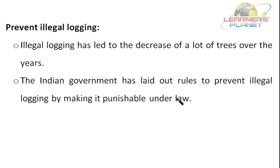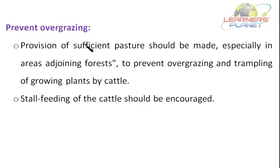Prevention of illegal logging should be there. Illegal logging has led to the decrease of a lot of trees over the years, and the Indian government has laid out rules to prevent illegal logging by making it punishable under law. Also, there should be provision of sufficient pasture, especially in areas adjoining forests, to prevent overgrazing and trampling of growing plants by cattle. Stall feeding of the cattle should be encouraged instead.